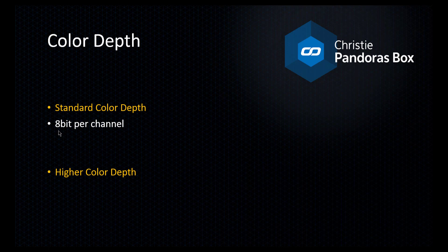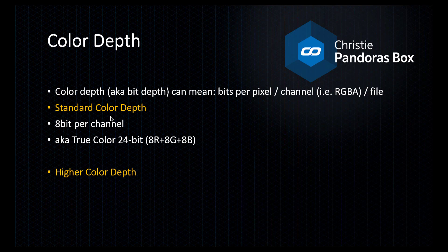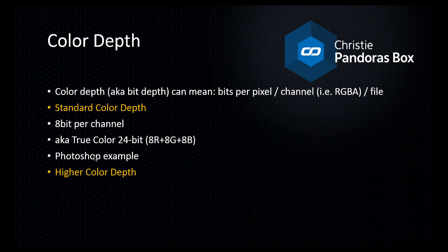Standard color depth saves 8-bit per channel, however this can also be called true color 24-bit — that 24-bit simply results from adding up the three channels. This can be quite confusing because the color depth is not really consistently defined. Depending on the software or image format it can mean bits per pixel, per channel (RGB or transparency), or it can actually mean profile. I would like to show how this looks in Photoshop or the Windows File Explorer, and answer whether 16-bit content is acceptable when rendering in higher color depth.